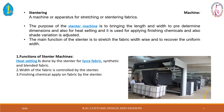Stentering is the fourth type of mechanical finishing. The main purpose is to set uniform length and width in the fabric — it is like stretching and ironing. The purpose of the stentering machine is to bring the length and width to a predetermined dimension, and also for heat setting. It is also used for applying finishing chemicals, and shade variation is adjusted. The main purpose of the stentering machine is to stretch the fabric widthwise and recover uniform width.